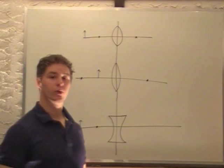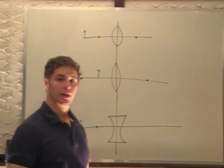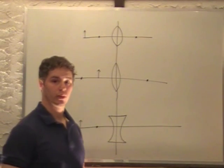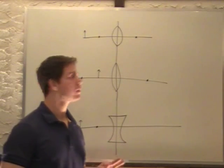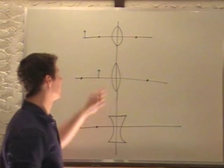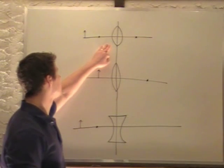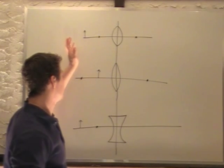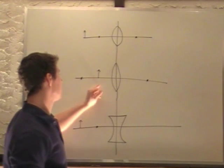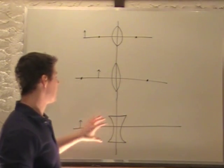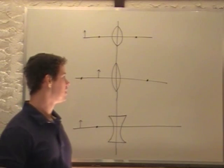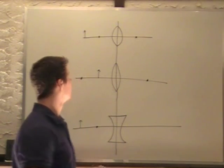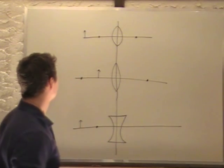This is a quick tutorial on how to draw ray diagrams for three different cases of lenses: a converging lens with the object outside of the focal point, a converging lens with the object inside the focal point, and a diverging lens. These make three different types of ray diagrams.